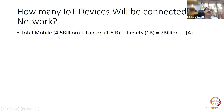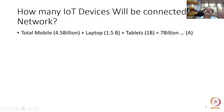Total mobiles in the world: 4.5 billion. Laptops and PCs connected to the network: 1.5 billion. Tablets: 1 billion. Total: 7 billion. Call this Equation A — 7 billion devices currently connected to the internet. These are all devices being used by human beings.